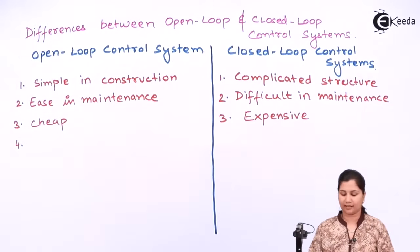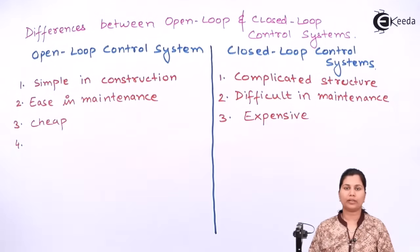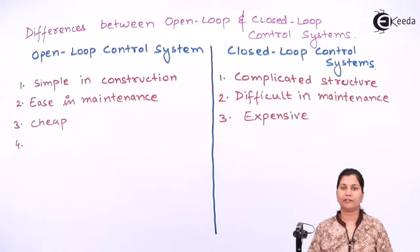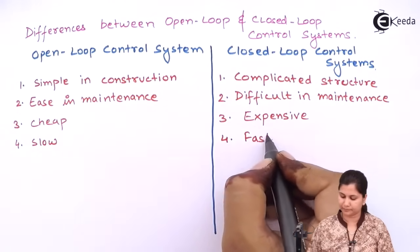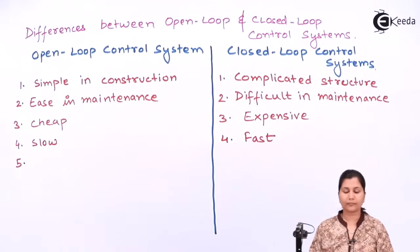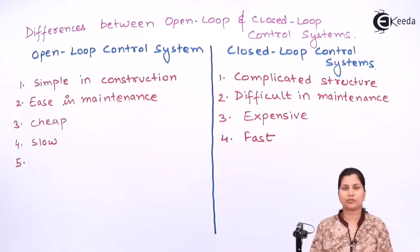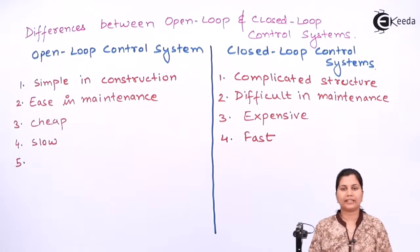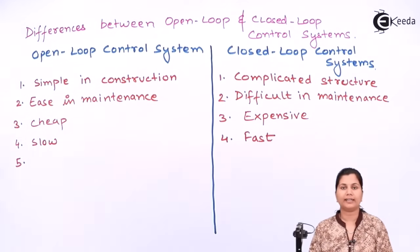The next difference is that open loop control systems are very slow in their working whereas the closed loop control systems are very fast. Also, the open loop control system does not have any feedback structure, so there is no mechanism for comparing the output and the input, and no corrections can be made — so these open loop control systems are inaccurate.